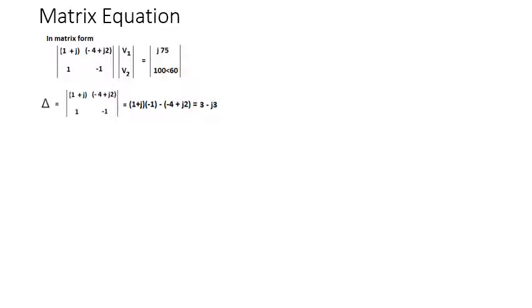We compute Δ as the determinant: cross-multiplying gives (1+j)(−1) minus (−4+2j)(1). Simplifying by opening the brackets and adding — or using a calculator in complex mode — gives the answer: 3 − j3.